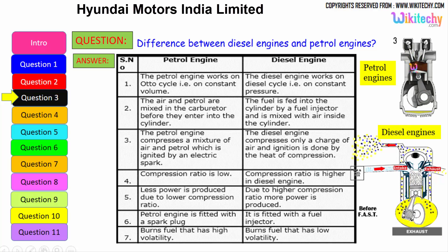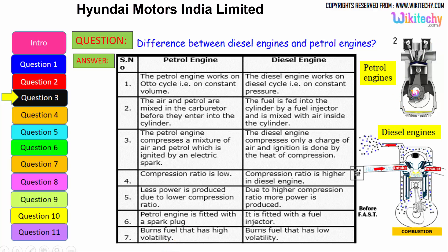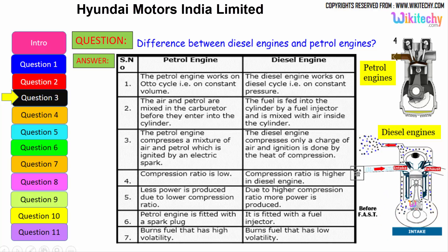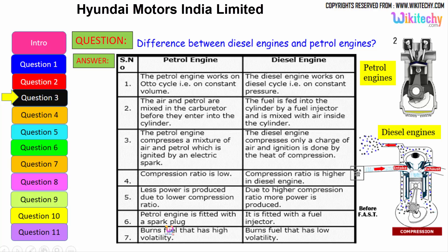The petrol engine is fitted with a spark plug, whereas the diesel engine is fitted with a fuel injector. The petrol engine burns fuel with high volatility — petrol is highly volatile — whereas the diesel engine burns low volatility liquid. Diesel is a low volatile liquid. These are some of the key differences between the petrol engine and the diesel engine.